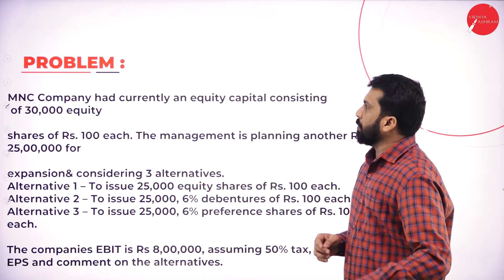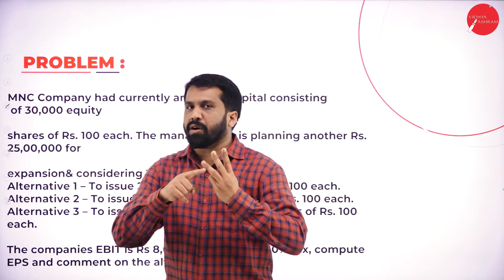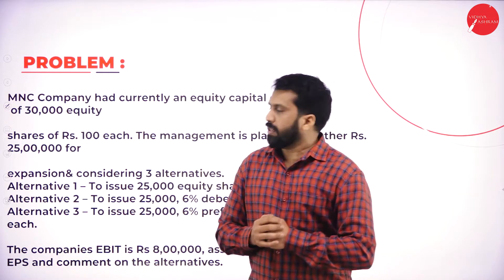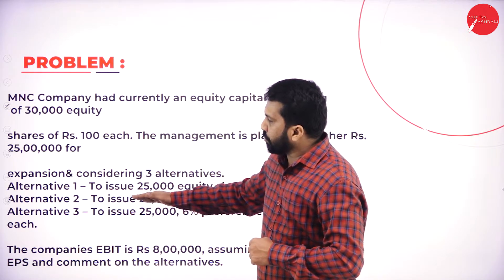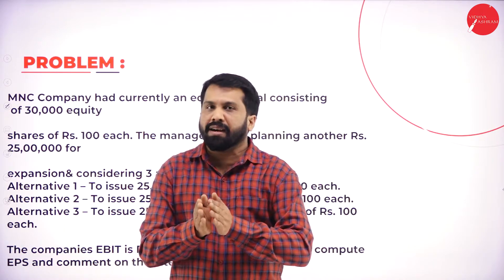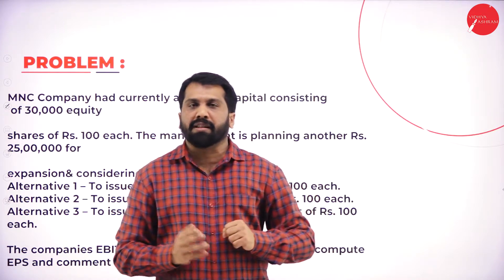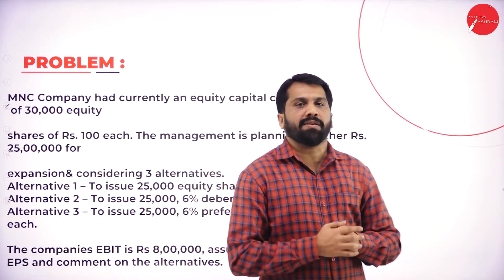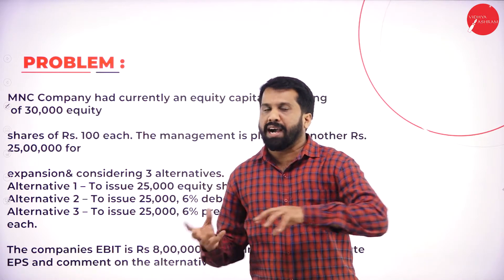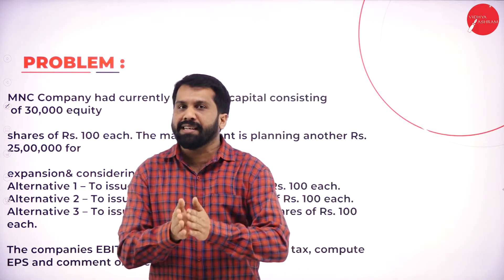We will go directly to the problem. In this problem, we have a combination of 3 alternatives. All 3 are separate — alternative 1, alternative 2, and alternative 3. They are not interrelated. We have to do each one separately. We cannot carry calculations from 1 to 2 or 2 to 3. Everything is independent.